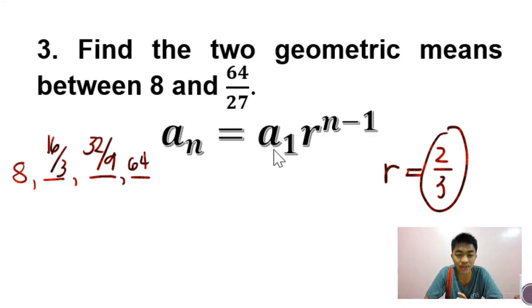So kung na-forget mo yung square root of the product, you can always use the formula to solve for the common ratio. And then after solving for the common ratio, you multiply it to the first term para makuha yung mga next terms. So that is how you're going to get the geometric mean of any geometric sequence.